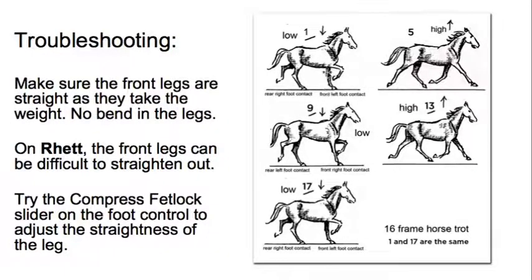Equally, as the front left leg travels under the body, that must be straight. It must not bend, otherwise you'll end up with a pantomime horse. Again, try the compress fetlock slider on the foot control if you need some help adjusting the straightness of that leg.